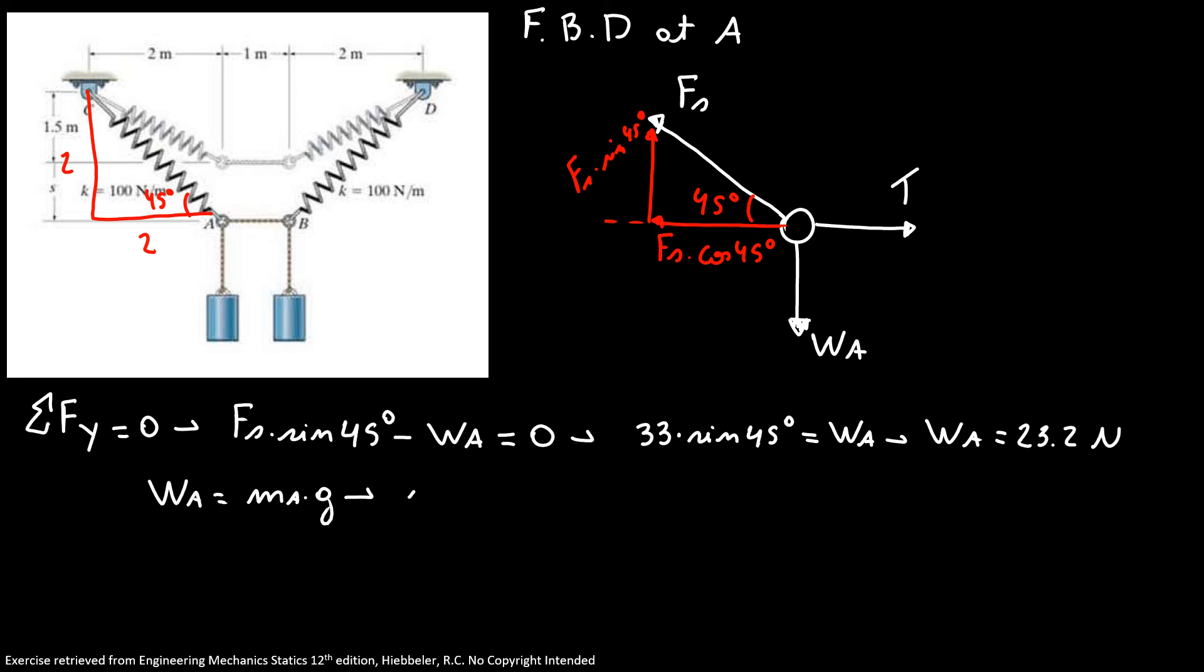My spring force is 33. So 33 times sine of 45 degrees is equal weight A. So I know my weight is equal 23.2 Nm.